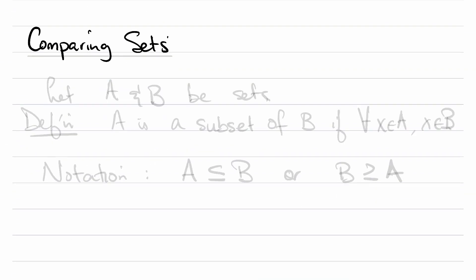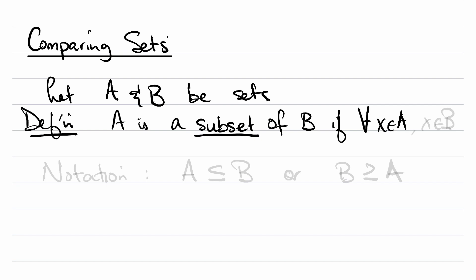Let's talk about how we compare sets, much like one would compare numbers. So here A and B are going to be sets. We're going to define what it means to be a subset. Definition: A is a subset of B if, for all elements x in A, x is in B.